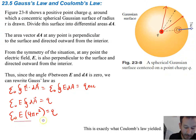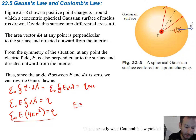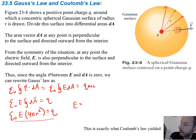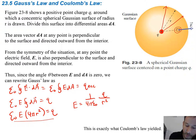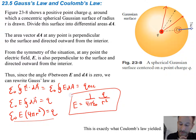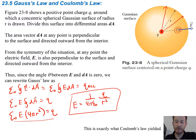Now if I take this equation and rearrange it for E, I'm going to divide ε₀ and 4πr² over to the other side, and you end up with 1 over 4πε₀ times q over r squared. And if we look at this, that is exactly Coulomb's law. So this derivation is going to be important.